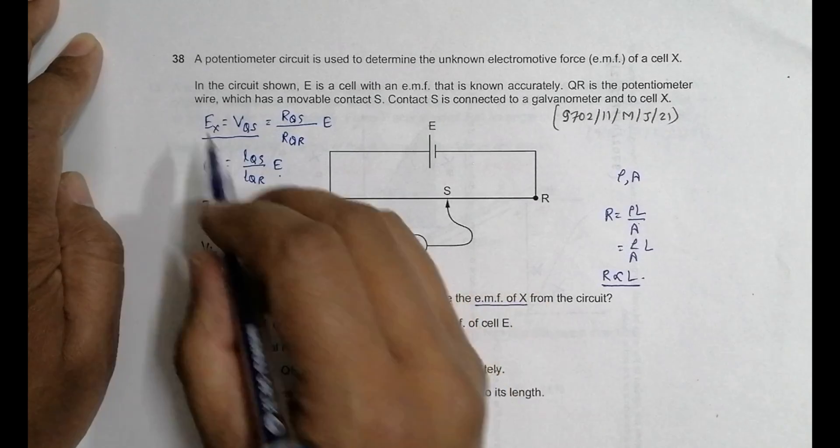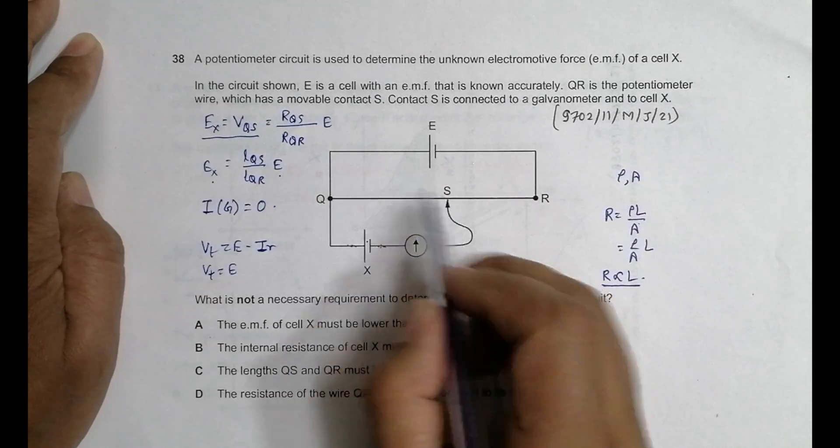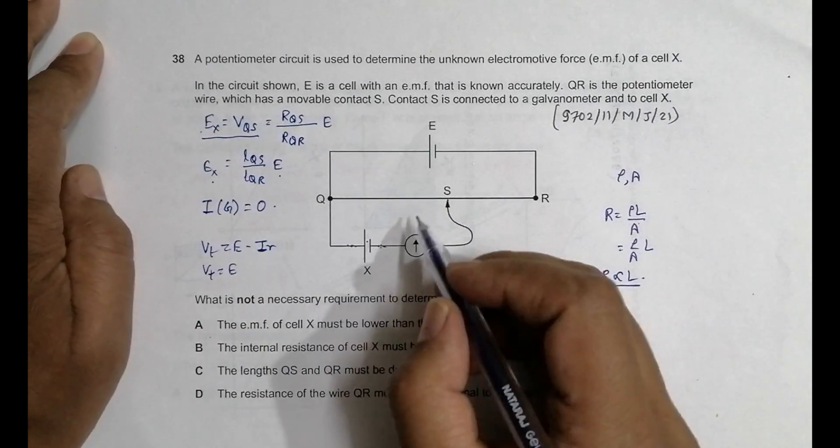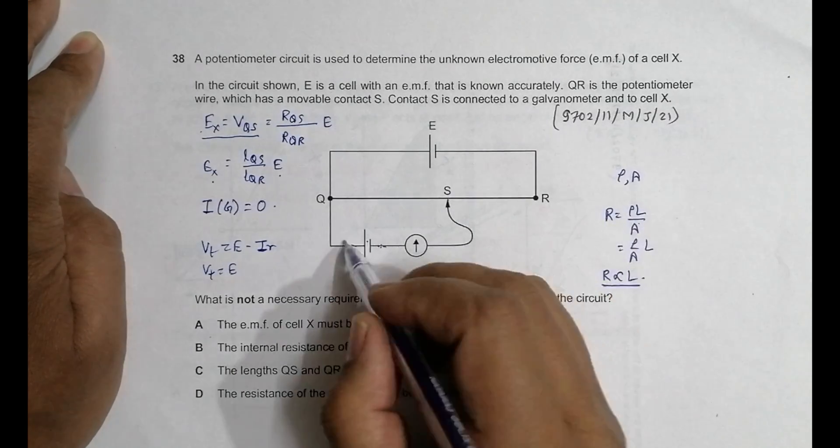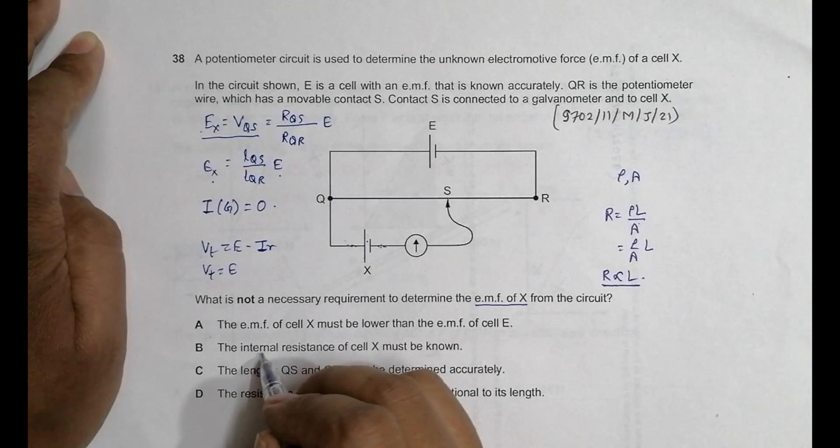So that means at that time, this EMF and the PD here, they are equal. So during this measurement, this EMF equals this PD, and this PD equals this VQS. So that means knowing the inner resistance is useless because we have made current 0. That's why this is not the absolutely necessary condition.